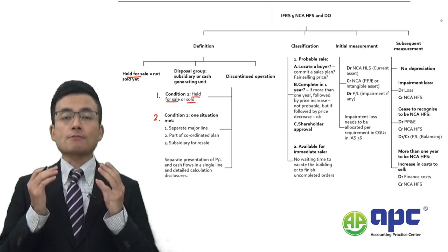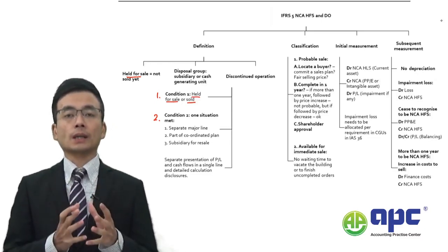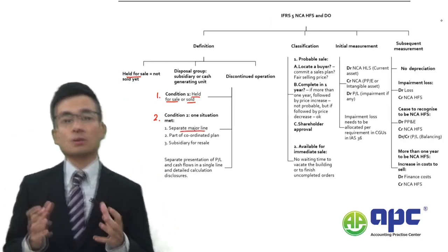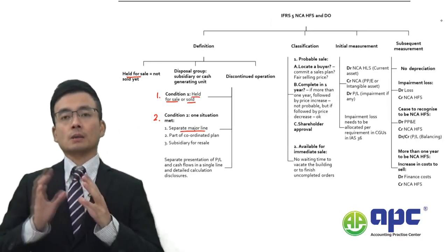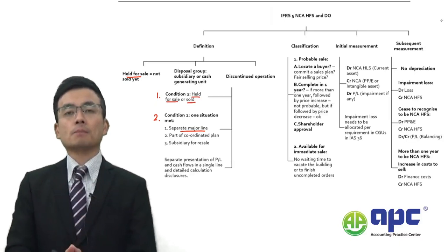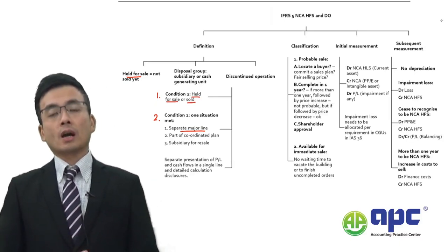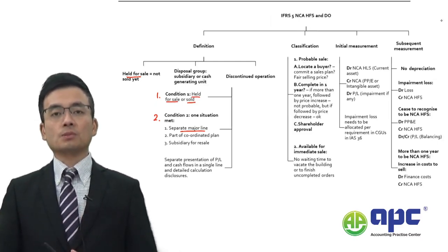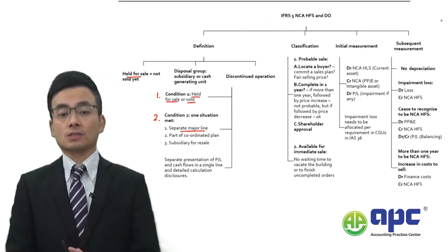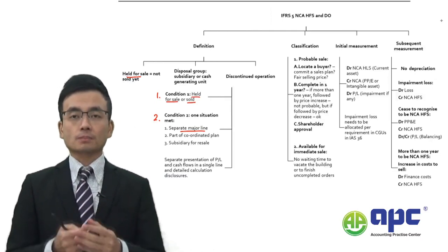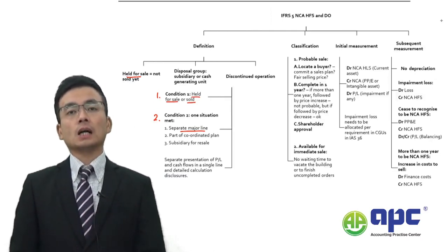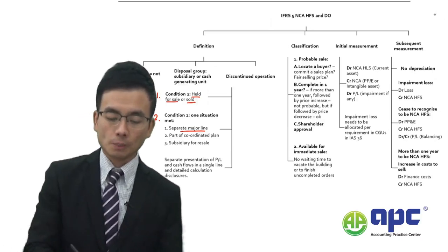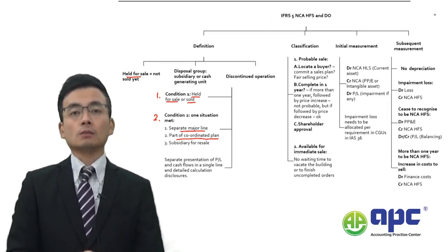For example, if the subsidiary you are currently holding is held for sale, and that subsidiary stands for a separate major line of your business — such as if you are selling glasses, mouse, and computers, and you decide to hold your computer production line for sale — that stands for a separate major line of business. Alternatively, if selling the computer product line affects the mouse segment as part of a coordinated plan, that would be another situation.